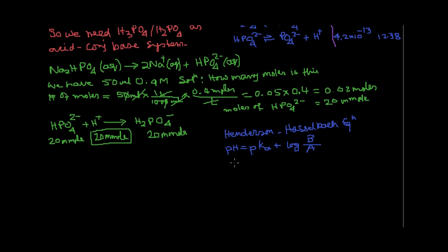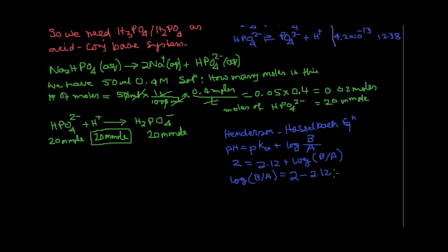The pH we need to make is 2, and the pKa of this system is 2.12. So: 2 equals 2.12 plus log(B/A), which means log(B/A) equals 2 minus 2.12, giving minus 0.12.